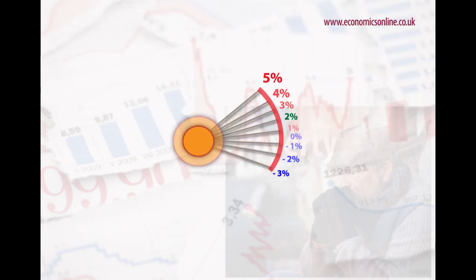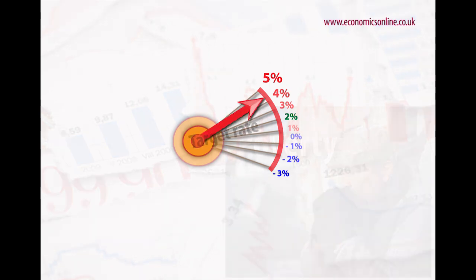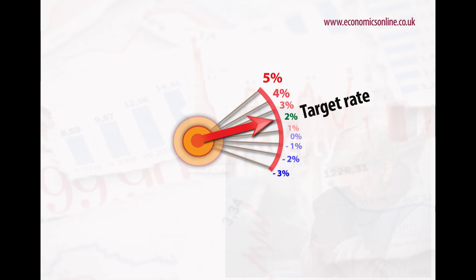The UK's target rate for the CPI is 2%, plus or minus 1%. During 2013 and 2014, this target was met without the need to raise rates, given the lack of aggregate demand and the recent global recession.